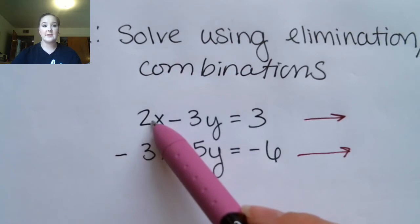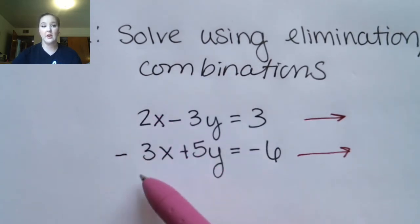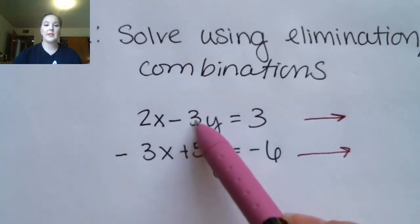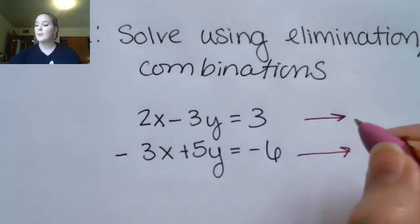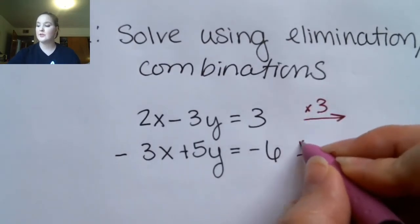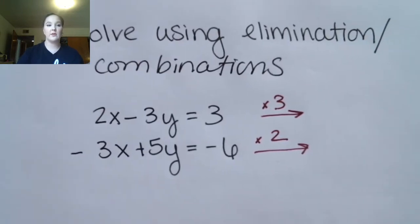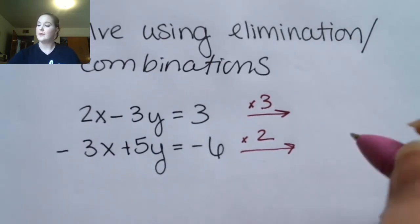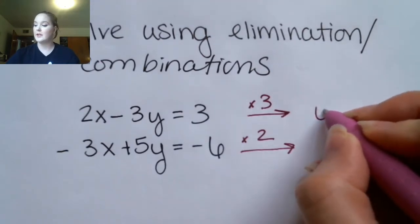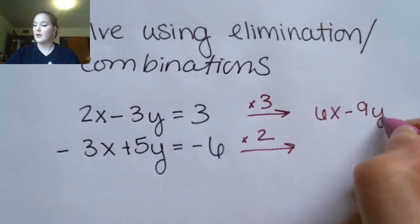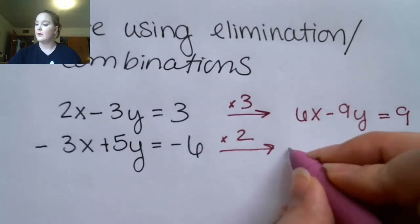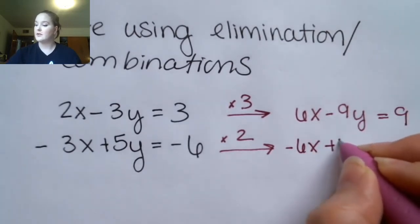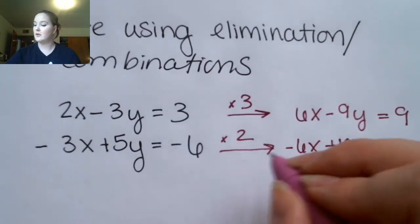We could make the coefficients six and negative six — we're looking for the least common multiple of 2 and 3 — or we could make them 15 and negative 15, looking for the LCM of 3 and 5. Just because of number size, I'm going to multiply by 3 and by 2. When I multiply the first equation by 3, I get 6x minus 9y equals 9, and when I multiply the second equation by 2, I get negative 6x plus 10y equals negative 12.